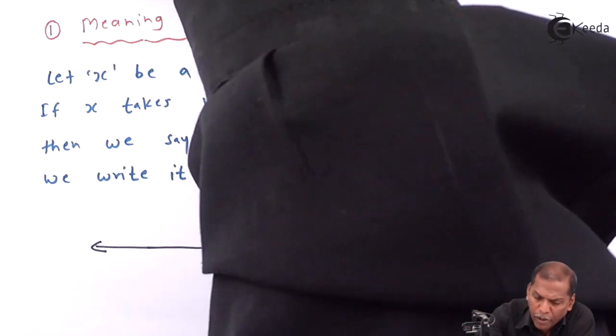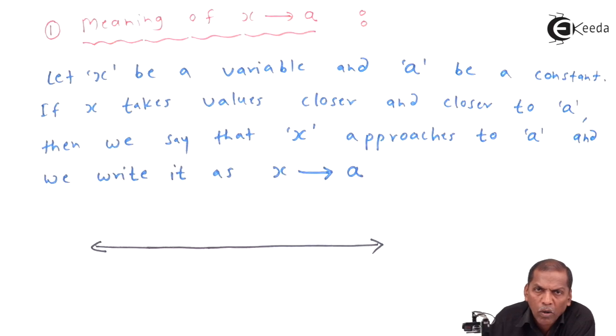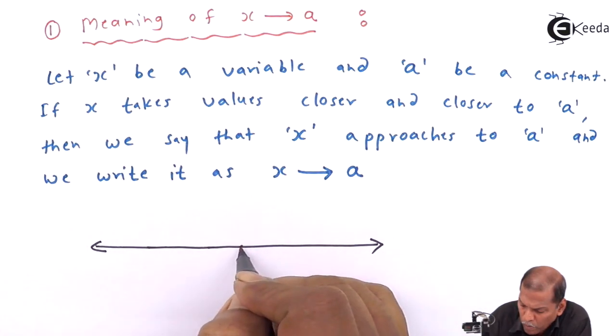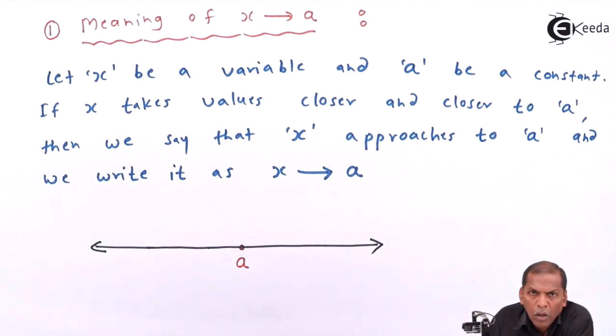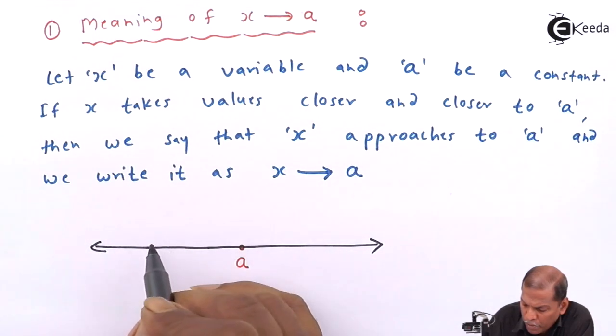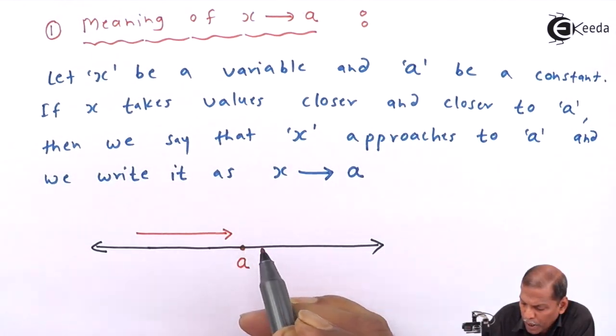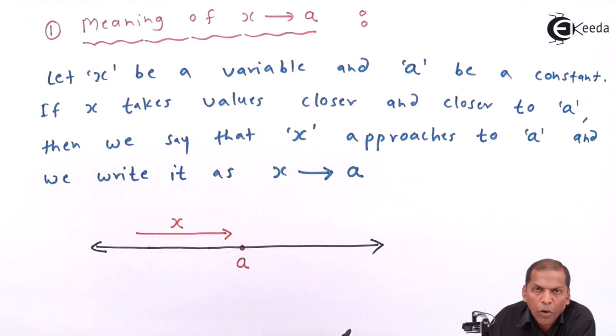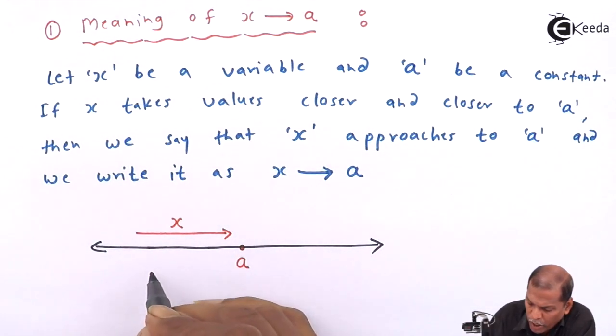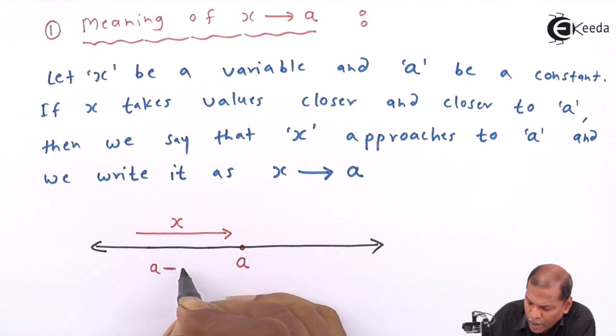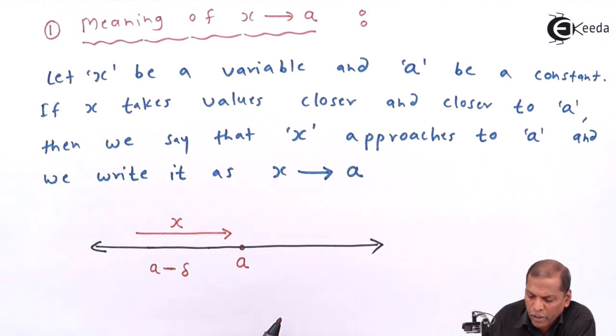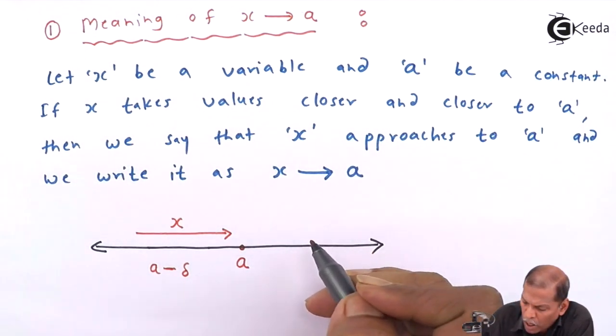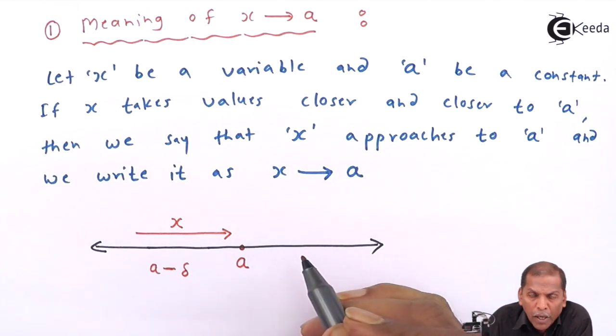At center we have x equal to a. So here, x approaches to a from left side and takes value less than a. Let that value we denote as a minus delta. This is our case number one.